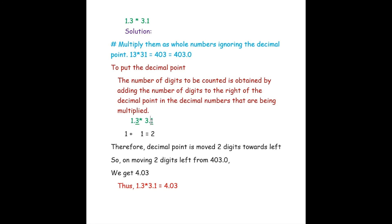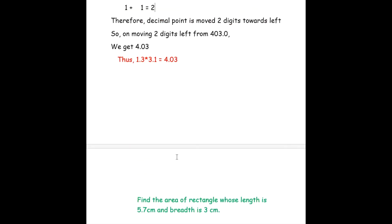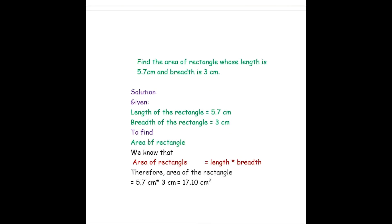In 1.3 there is one digit to the right of the decimal point, and in 3.1 also one digit — so 1 plus 1 gives two digits. Moving two digits towards the left from 403.0 gives us 4.03. Thus 1.3 into 3.1 is 4.03.